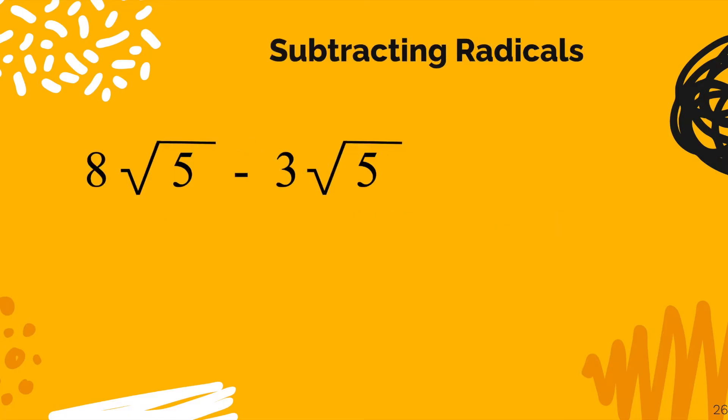Let's do a subtraction problem even though it's just the same as adding a negative. 8 radical 5 minus 3 radical 5. You see, these are like terms. They're both radical 5. So 8 of these radical 5s take away 3 is going to give you 5 of these radical 5s.